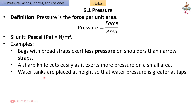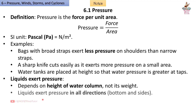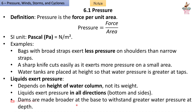Water tanks are placed at height so that water pressure is greater at taps. Liquids exert pressure depending on the height of the water column, not its weight. Liquids exert pressure in all directions — bottom and sides. Dams are made broader at the base to withstand greater water pressure at depth.